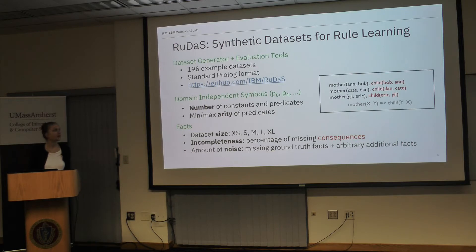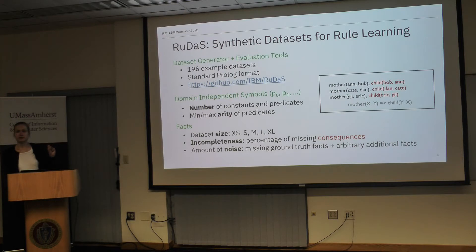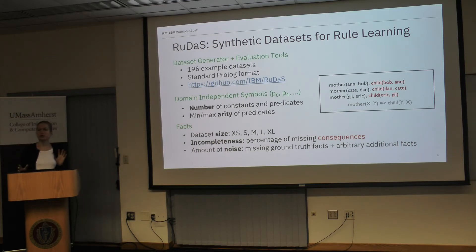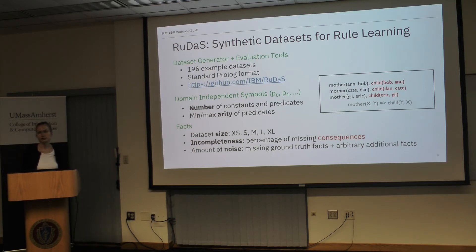We consider incompleteness — how many of the rule consequences are present in the data. For instance, if we have data about mothers and children and the corresponding rule, we remove some child facts according to the incompleteness degree we give as a parameter. If we say 20% missing consequences, we remove those, which models the reality where we are usually not given all the consequences. We also consider noise: missing ground facts — in this example, the mother fact — or additional arbitrary facts unrelated to the rules.